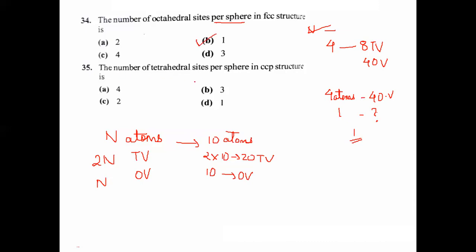Number of tetrahedral sites per sphere in CCP - CCP is nothing but FCC. For 4 atoms, you have 8 tetrahedral voids. So for 1 atom, it is 8 divided by 4, that is 2.